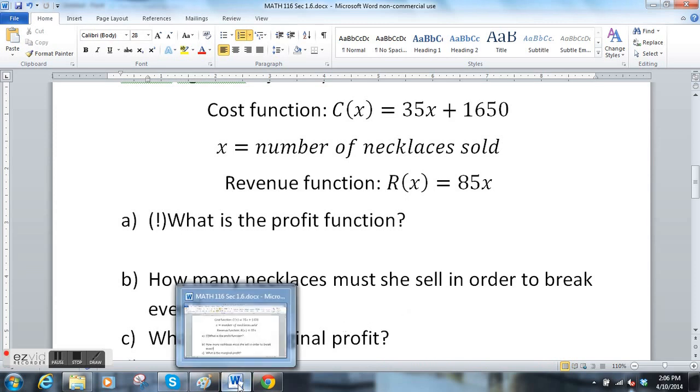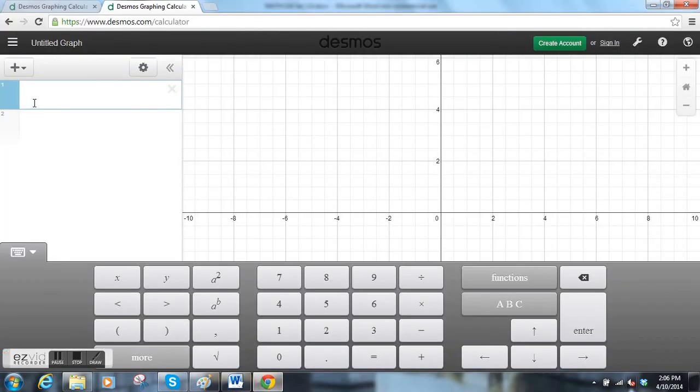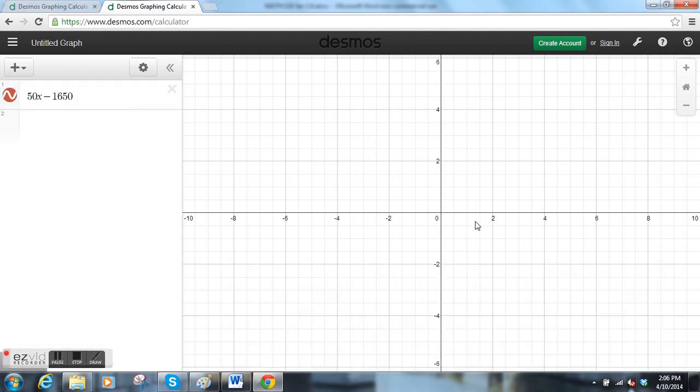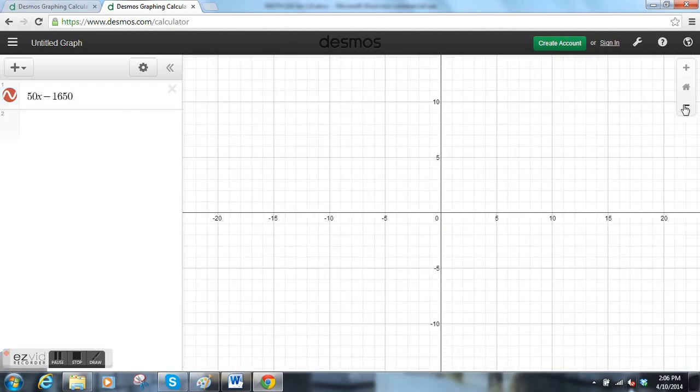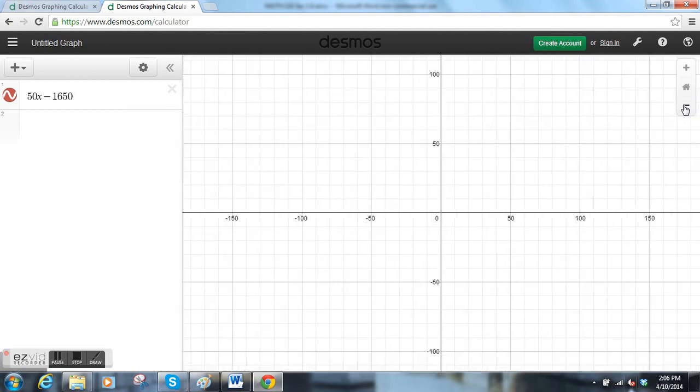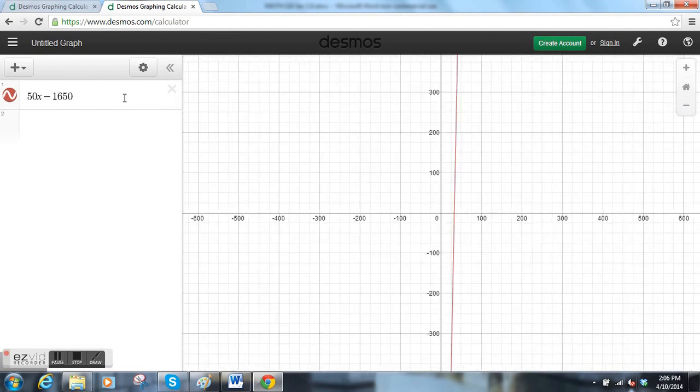In order to break even, there's a couple different ways to think about this. Let me put this function up here. We can think of our profit function as 50x - 1650. This line represents the profit. Below this line your profit is negative and above this line your profit is positive. So the break-even point is the place where the profit crosses the x-axis or where the profit is zero.